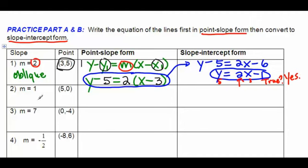2, 3, and 4 are all oblique lines because the slopes are neither 0 nor are they undefined. This would be a good opportunity for you to pause the video, write the point-slope form, and then solve for y to get slope-intercept form for all 3 of these problems.